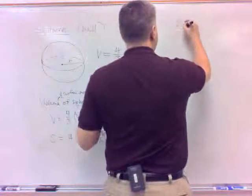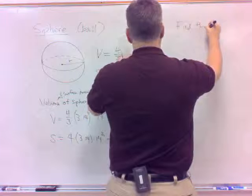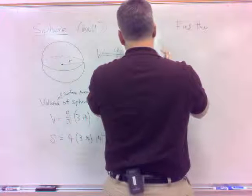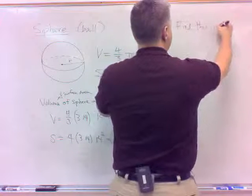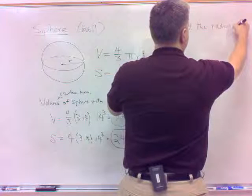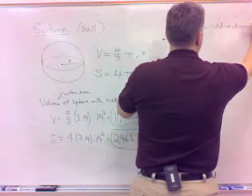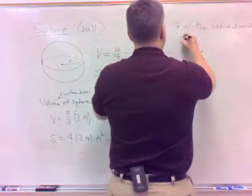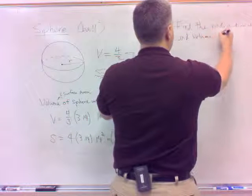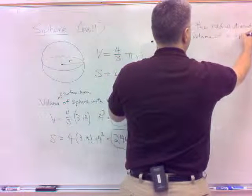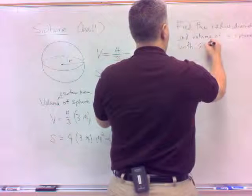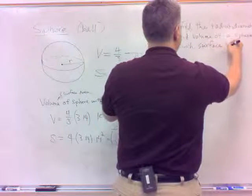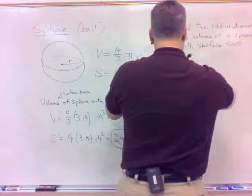All right, so let's find the radius, diameter, and volume of a sphere with surface area 500 pi squared.